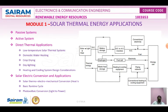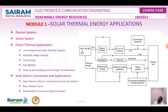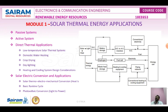There are two types of solar energy applications: direct thermal applications and solar electric conversion. In thermal applications, the heat of the Sun is used directly, or solar radiation is converted into electricity via light. Thermal applications include low-temperature solar thermal systems, domestic water heating, crop drying, daylighting systems, and heating and cooling systems. Solar electric conversion includes thermoelectric, mechanical conversions, basic Rankine cycle, and photovoltaic conversions.